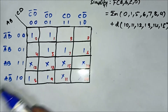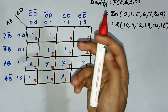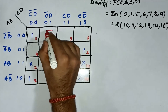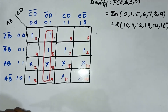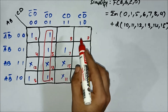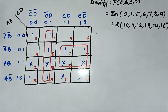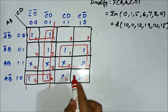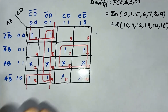We have marked all the cells according to the specified values. Now we have to form the groups. The only priority is to cover the one-marked cells. We can form a quad involving cells 1, 5, 9, 13. Then we can form another quad with those 4 cells, and another quad here. The X-marked cells 10, 11, and 12 are left behind — no need to form any extra group for them.